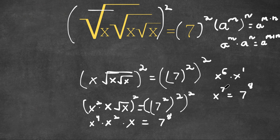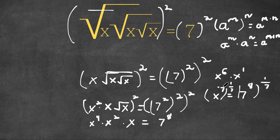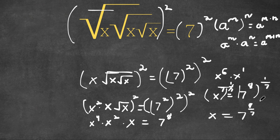Now, to cancel out this power, I'm going to take the power of 1 over 7 on both sides. These two cancel out because 7 times 1 over 7 is 1. So now we get x is equal to 7 to the power of 8 times 1 over 7, which is simply 8 over 7. So this is our answer.